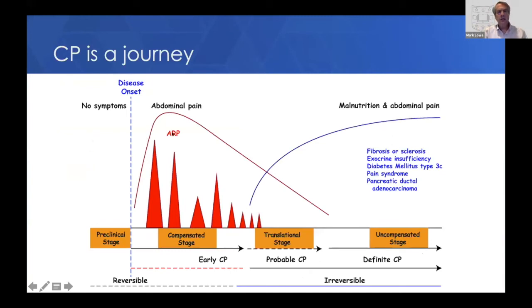Chronic pancreatitis is a journey. Most kids have episodes of acute recurrent pancreatitis from which they basically recover, then move to developing definite chronic pancreatitis where changes are irreversible — they can develop fibrosis, sclerosis, exocrine insufficiency, diabetes, pain, and a risk for pancreatic ductal adenocarcinoma and malnutrition. Chronic pancreatitis is a process, which also means there is hope: if we can develop therapies to stop these episodes of acute pancreatitis, we could prevent and stop this journey.